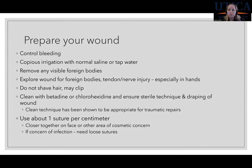To prepare your wound, first control any bleeding — hold pressure, irrigate, and look for the source. Depending on the area, you may need a small tourniquet, and for very deep wounds, sometimes a suture to tie off a bleeder. Make sure to irrigate well with normal saline or tap water to prevent infection. Remove any foreign bodies you see, and explore wounds for foreign bodies as well as nerve and tendon injuries, especially in the hands.